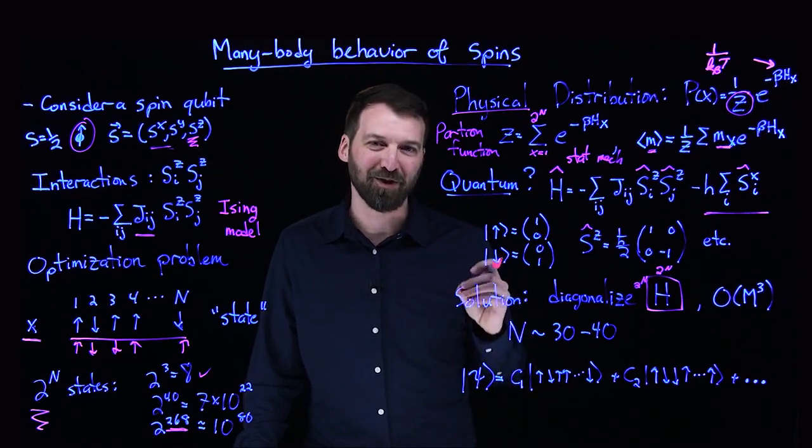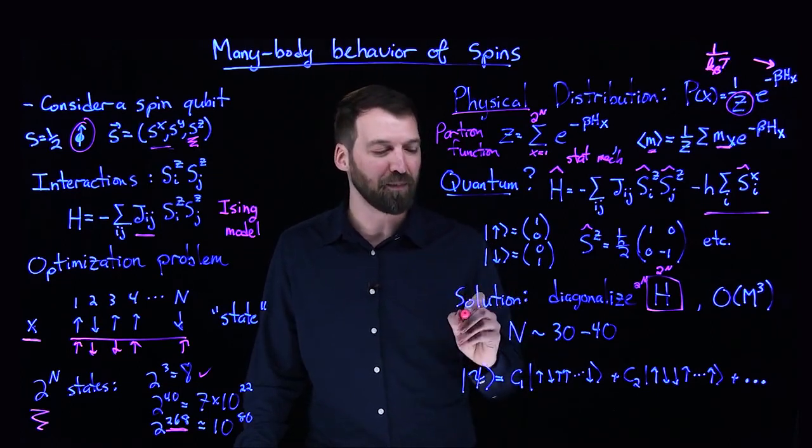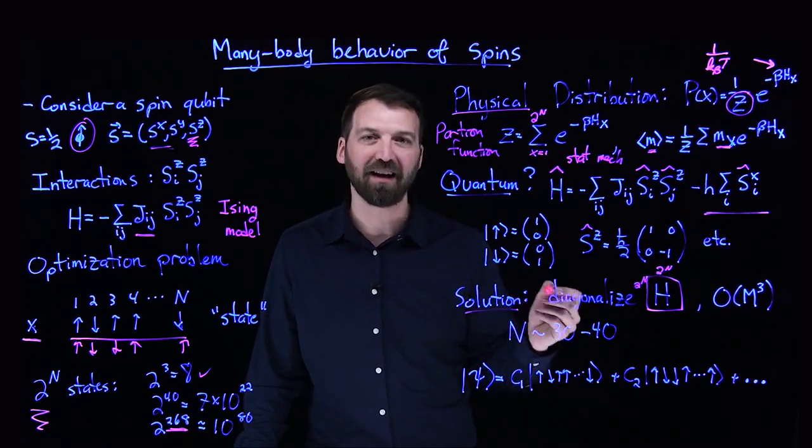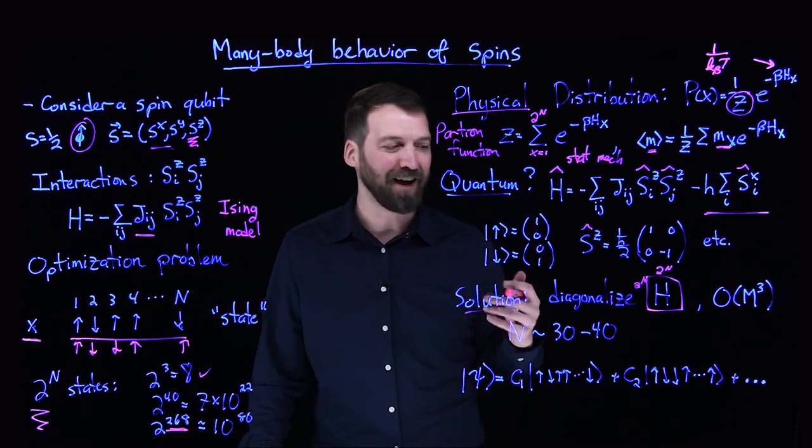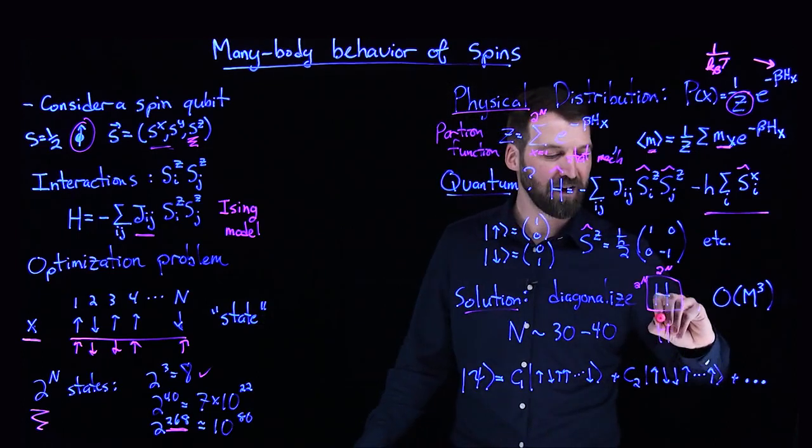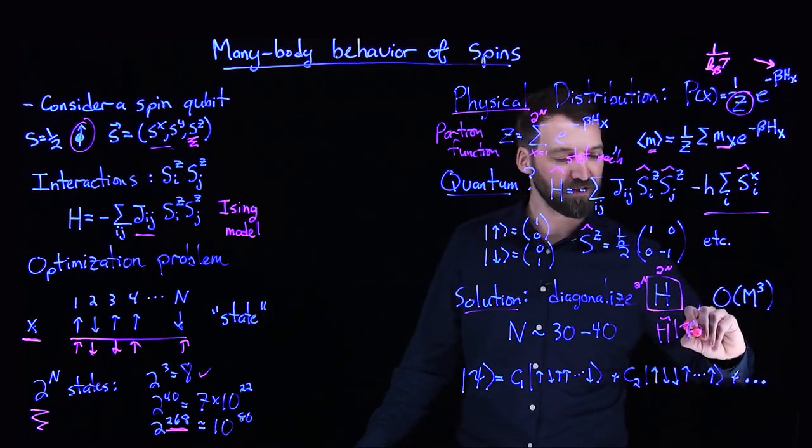That matrix—the solution, if you will, of the quantum many-body problem—is essentially diagonalizing that matrix. It's taking that matrix and finding all of the eigenvalues and eigenvectors that are governed by the time-independent Schrödinger equation.